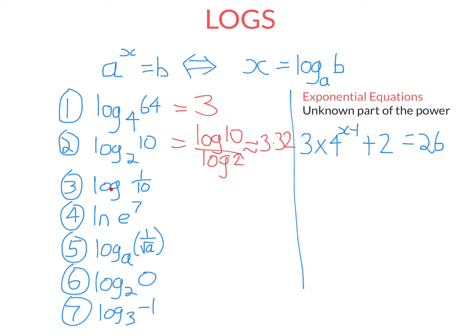When you just see a log by itself with no base, you assume it's base 10. So log base 10 of 1/10 is saying what do you raise 10 to to get 1 over 10? And that's of course minus 1 — 10 to the power of minus 1 is 1 over 10. When you see ln, it always means log base e. So ln(e^7) is saying what do you raise e to to get e to the power of 7? Well, that's 7.